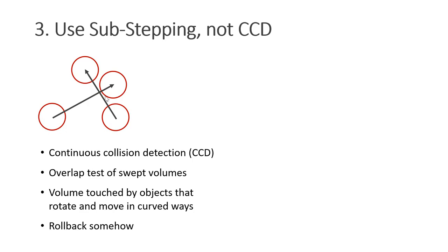Once we have detected the collision, we have to roll back the simulation somehow. If we use substepping instead, the chances that we miss the collision are much smaller. I explained in tutorial number 9 how substepping works. Basically, instead of performing n solver iterations per time step, we perform n substeps. What's important here is that we create the hash only once. Otherwise, the simulation would be much too slow.